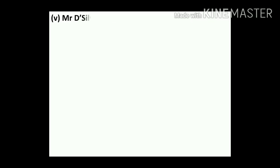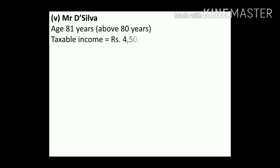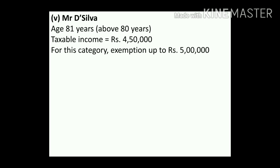Fifth one: Mr. Disilva, age 81 years — above 80 years, so he is a super senior citizen. The exemption for this age group is five lakhs. His taxable income is ₹4,50,000, which is less than five lakhs. Therefore he will not pay any tax, because his taxable income is less than the exemption limit. Mr. Disilva will not have to pay income tax.